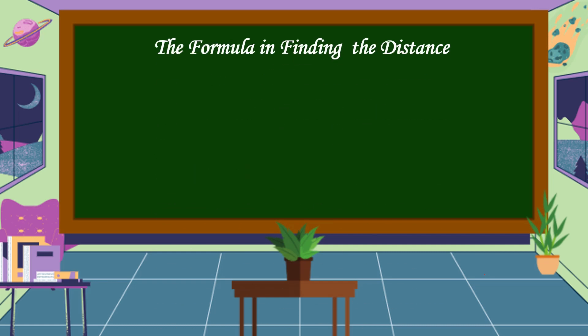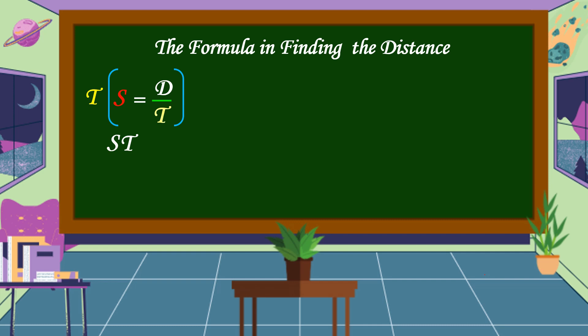What is the formula in finding the distance? The formula for distance is derived from the speed formula S = D/T. We eliminate T as the denominator of D by multiplying both sides by T. T times S equals ST, and T divided by T cancels out, so the remaining item on the right side is D. Therefore, D is equal to S times T. This is the formula for finding the distance.